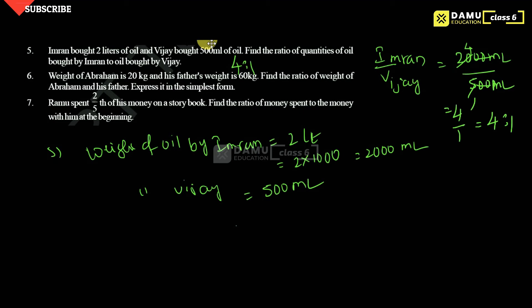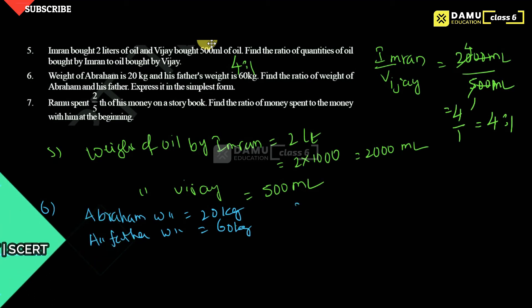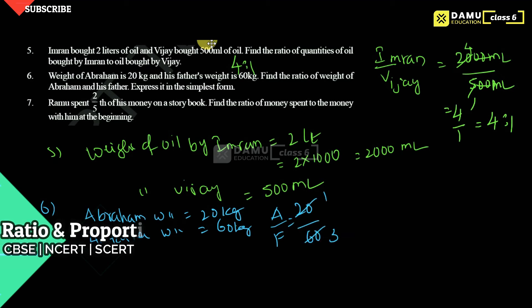Next question: weight of Abraham is 20 kg and his father's weight is 60 kg. Find the ratio of Abraham's weight to his father's weight expressed in simplest form. Abraham is 20 kg, father is 60 kg. So 20 by 60: 20 ones are 20, 20 threes are 60 — cancel the zeros — that gives 1:3. That is the simplest form, which means we cannot reduce it further.